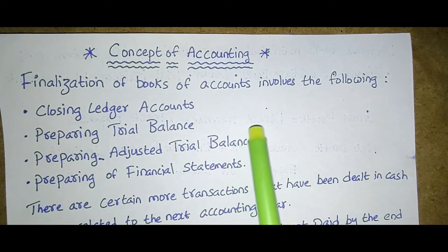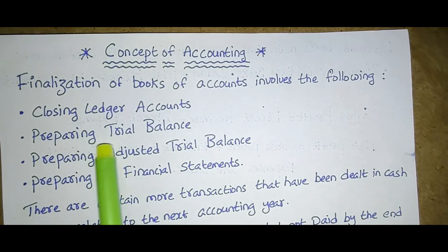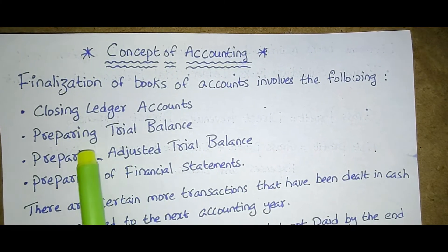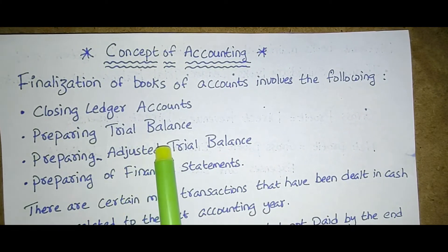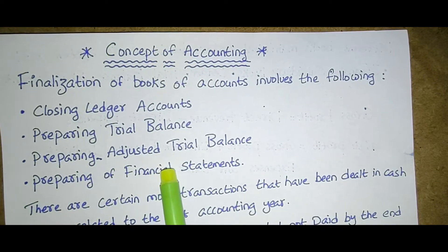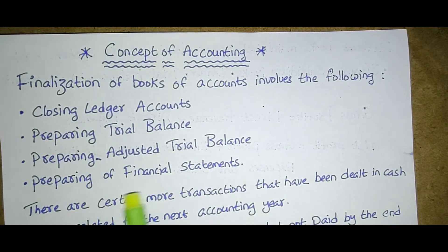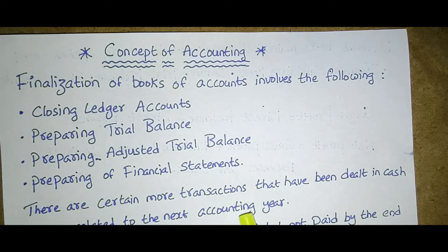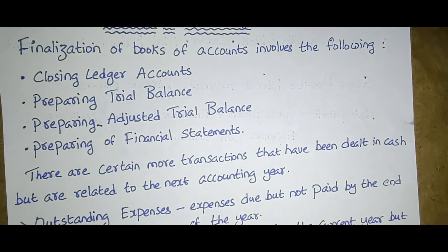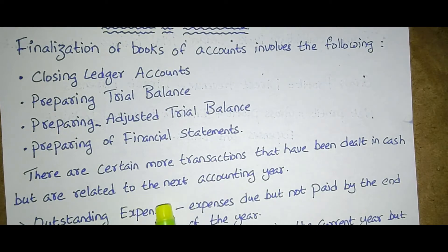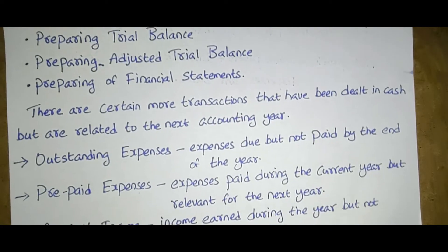Finalization of books of accounts involves the following: closing ledger accounts, preparing trial balance, preparing adjusted trial balance, and preparing financial statements. There are certain transactions that have been dealt in cash but are related to the next accounting year.